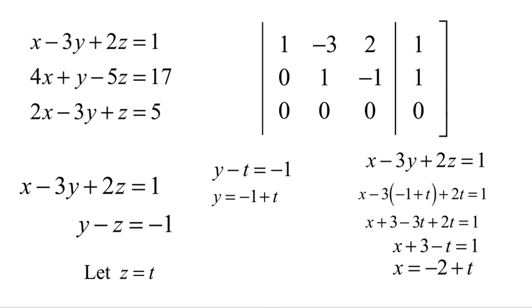So I have solved for x in terms of t, negative 2 plus t. I've solved for y in terms of t, negative 1 plus t. And I've solved for z in terms of t. So my answer is a set of all values of the form (negative 2 plus t, negative 1 plus t, t).